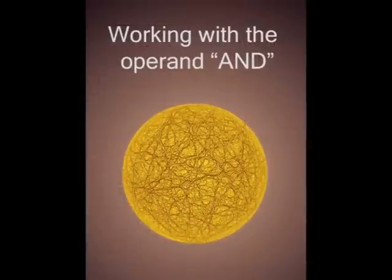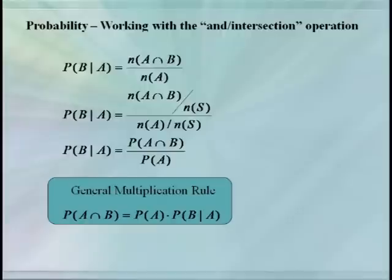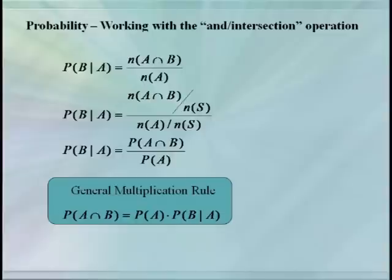So now we're ready to get a rule for AND. Starting with our formula for conditional probability — the probability of B given A equals the number of things in A intersect B divided by the number in A — and dividing numerator and denominator by the size of the sample space, we get: the probability of B given A equals the probability of A intersect B divided by the probability of A. Rearranging, we get our general multiplication rule: the probability of A intersect B equals the probability of A times the probability of B given A.